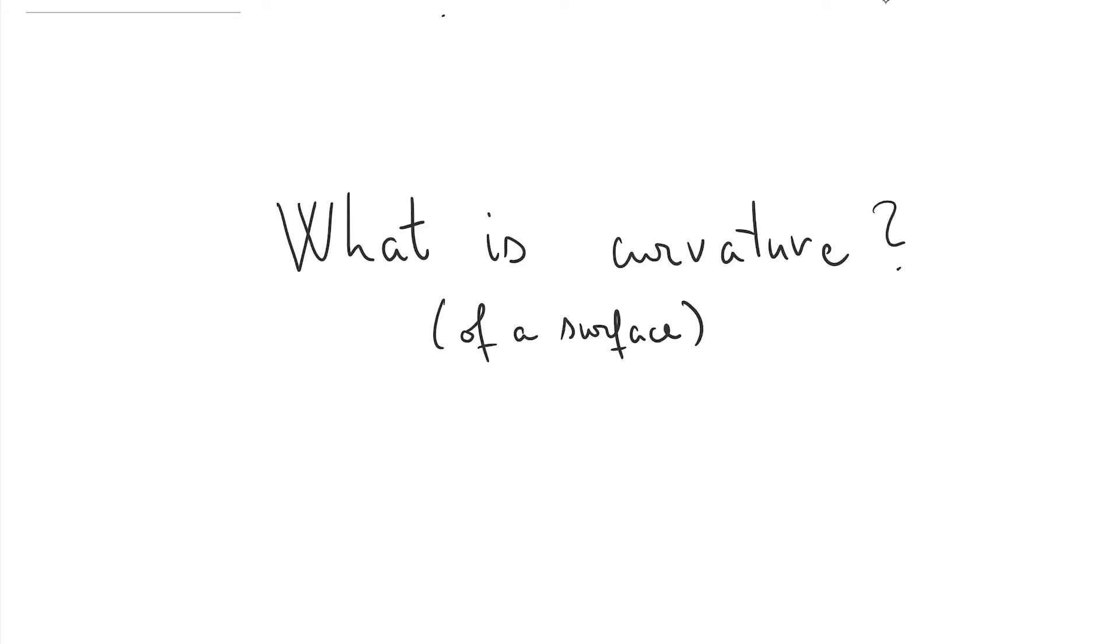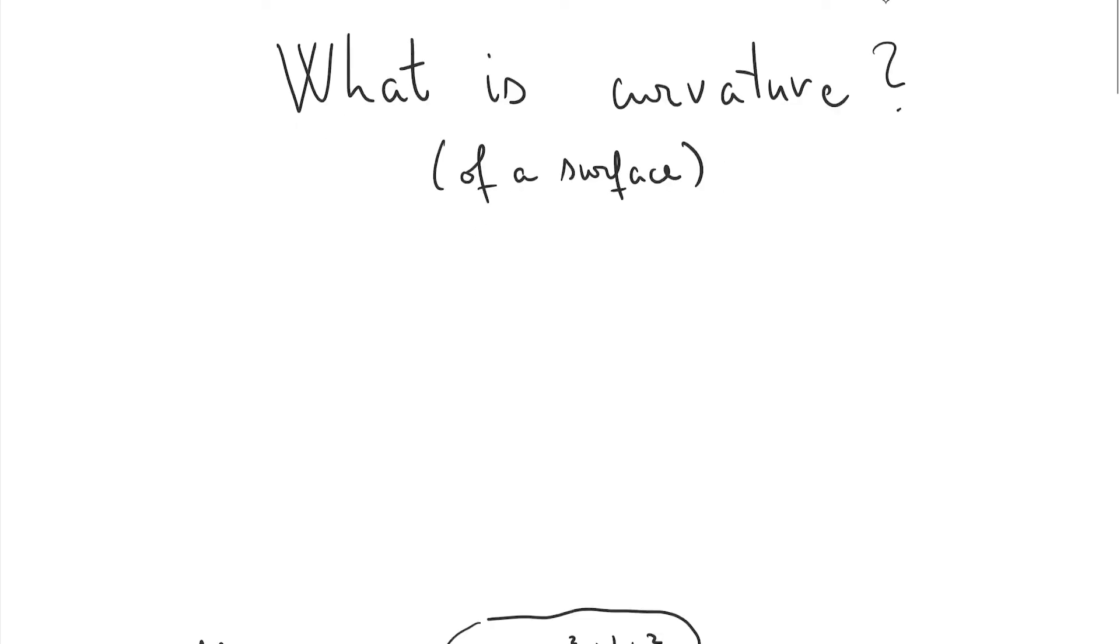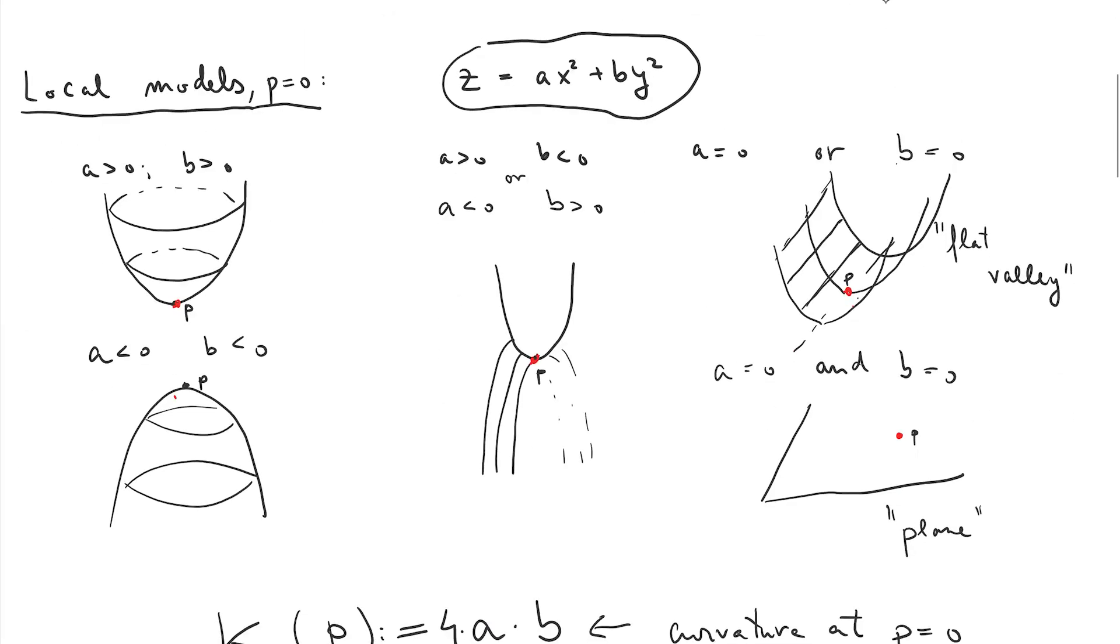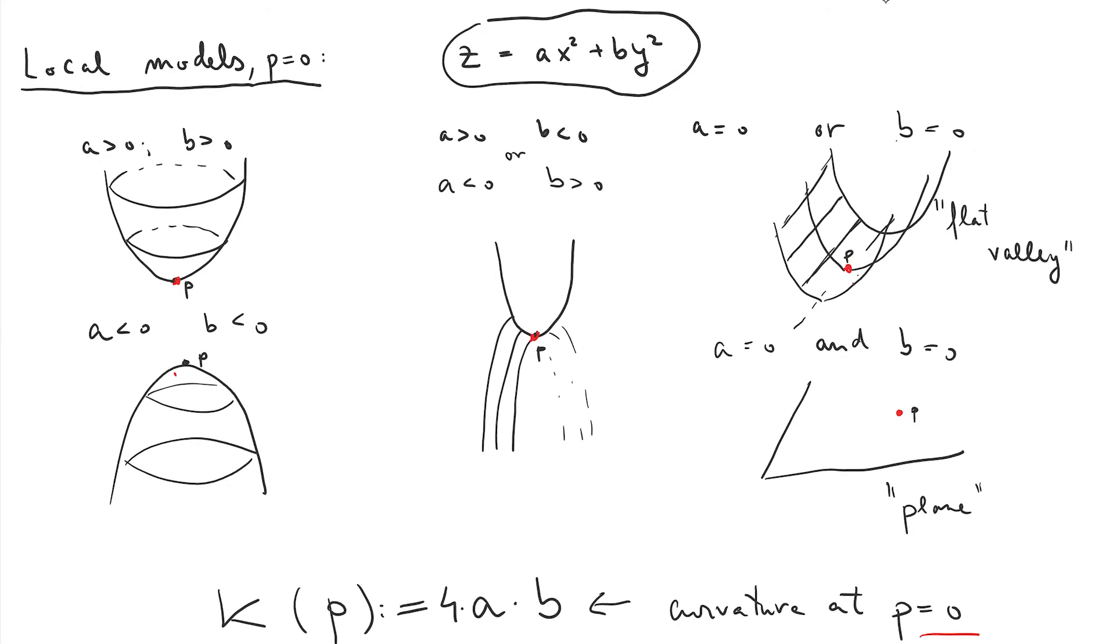In this video, I'll explain as simply as I can what the curvature is of a surface. So we start with the local situation. In this very simplified situation, we're looking at surfaces of the following type: Z equals Ax squared plus By squared.